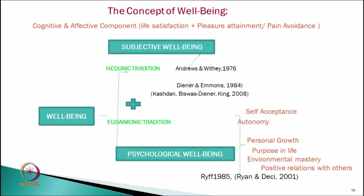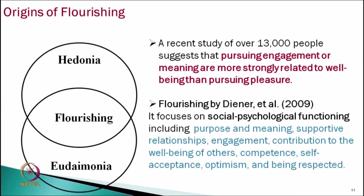Some scholars combined these two models and proposed flourishing theory or well-being theory. By including these two independent theories, they developed further theories in psychology. They considered cognitive and affective components — life satisfaction, pleasure attainment, and pain avoidance — plus self-acceptance, autonomy, personal growth, purpose in life, environmental mastery, positive relationships with others, and more. For example, Diener and associates in 2009 proposed the flourishing theory, now a well-established psychological test.